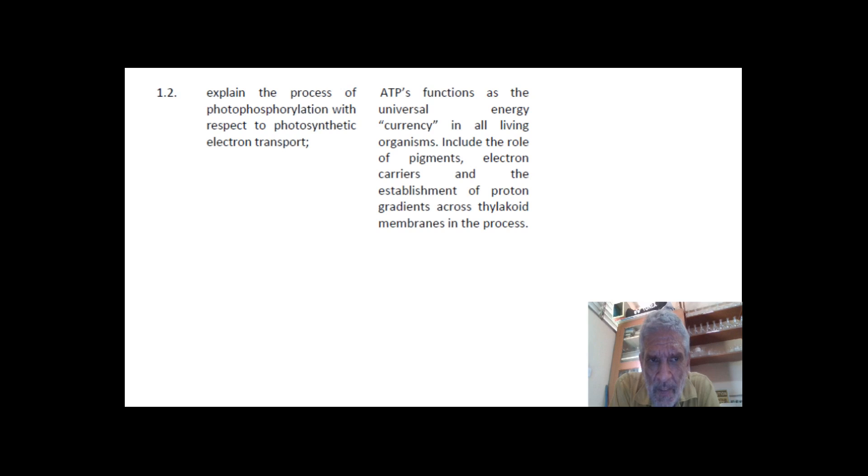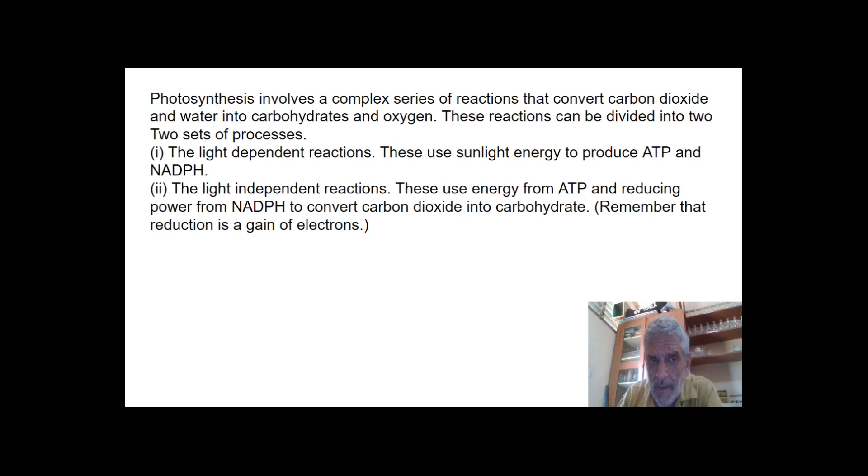Explain the process of photophosphorylation with respect to photosynthetic electron transport. In this process we're going to see the movement of lots of electrons. And ATP's function as universal energy currency. ATP is the currency in which organisms use energy. Energy might be contained in glucose for example, but it can't be spent as glucose. It has to be converted into ATP first.